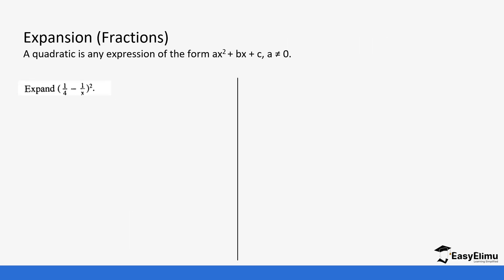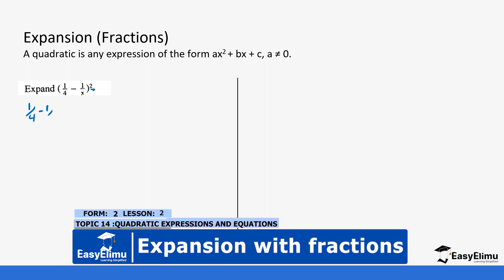We are still using the same formula, but the only difference is we are working with fraction numbers. A quadratic expression is any expression in the form AX² + BX + C, where A is not equal to zero. So we want to expand this value. The first thing you need to do is interpret the question well. When you see a value in brackets squared, it means it has been multiplied by itself two times. So this is going to be (1/4 minus 1/x) multiplied by itself two times.